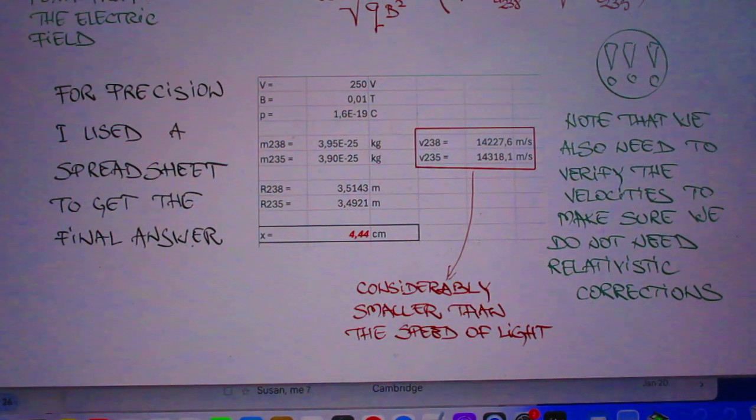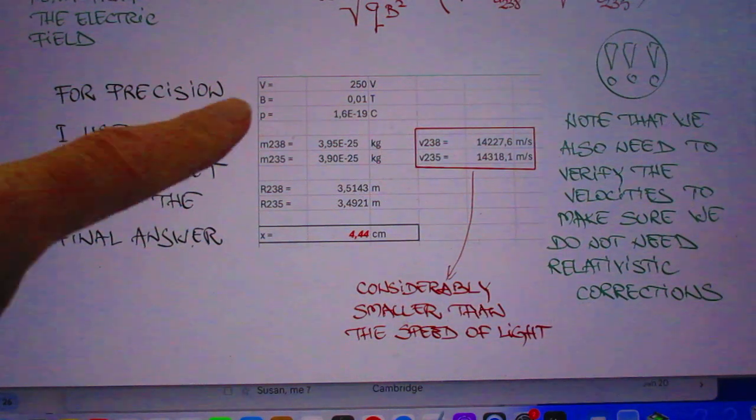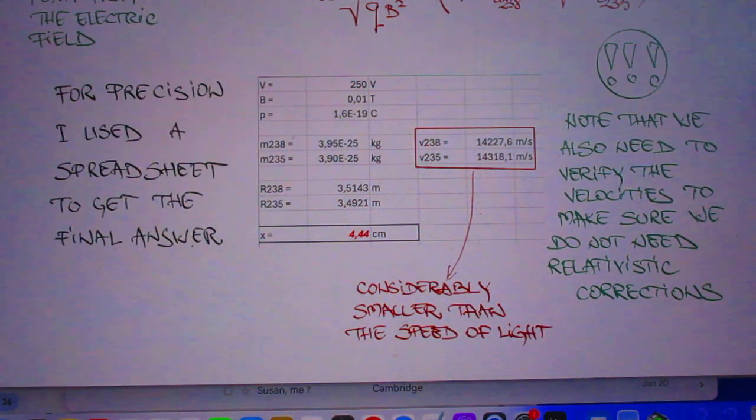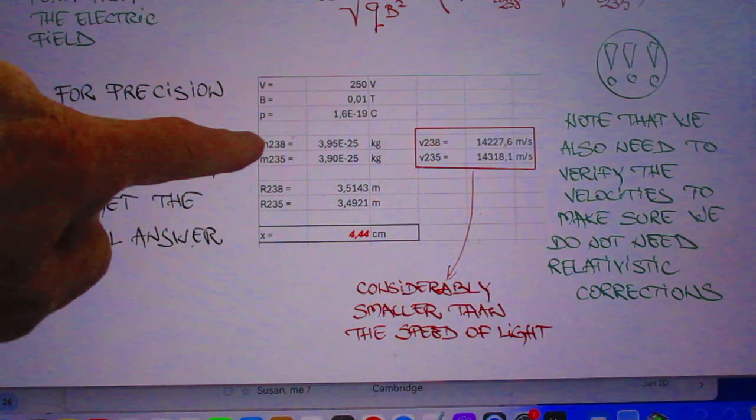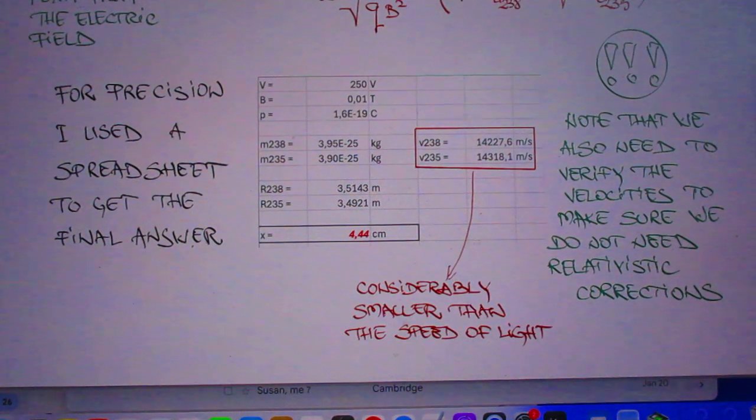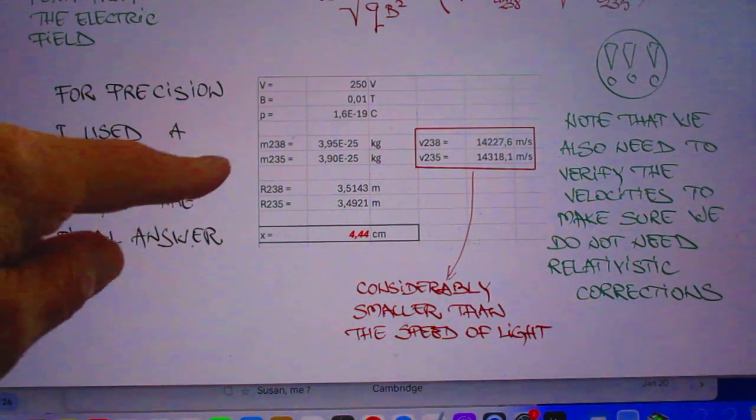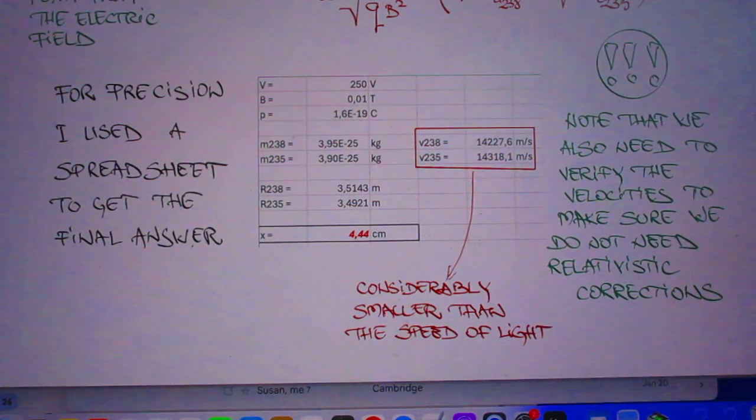So Oregon puts here in all the dimensions again. Potential difference, magnetic B field, charge of the ions, mass of 238 you have to look that up, mass of 235 you also have to look that up. He also calculated here the speed of these ions, and the speed is considerably smaller than the speed of light. It's quite obvious when you come to think of it, of the huge mass of these particles.